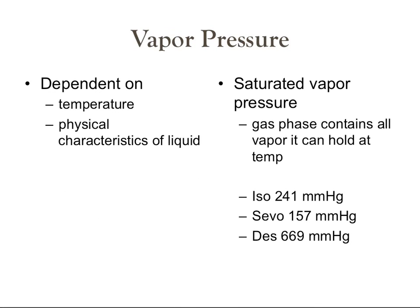We'll start with the gas laws. When a volatile liquid is in a closed container, the molecules will move from the liquid phase to the vapor phase until the number of molecules in the vapor phase is constant. The molecules in the vapor phase will bombard the walls of the container, creating a pressure — this is called the vapor pressure. The vapor pressure is dependent on temperature and the physical characteristics of the liquid. When temperature increases, there is an increase of molecules in the vapor phase, leading to an increase in vapor pressure.